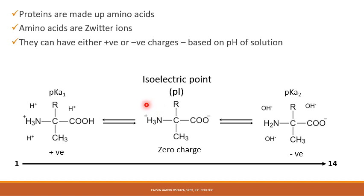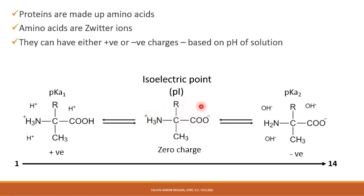Taking a general amino acid structure, you have the R alkyl group, the carboxyl group, the amino group, and the methyl group. When you have both a positively charged amino group and a negatively charged carboxyl group, the positive and negative charges negate each other and you have a net zero charge overall. This particular point where the amino acid has zero charge is called the isoelectric point and is designated by PI.